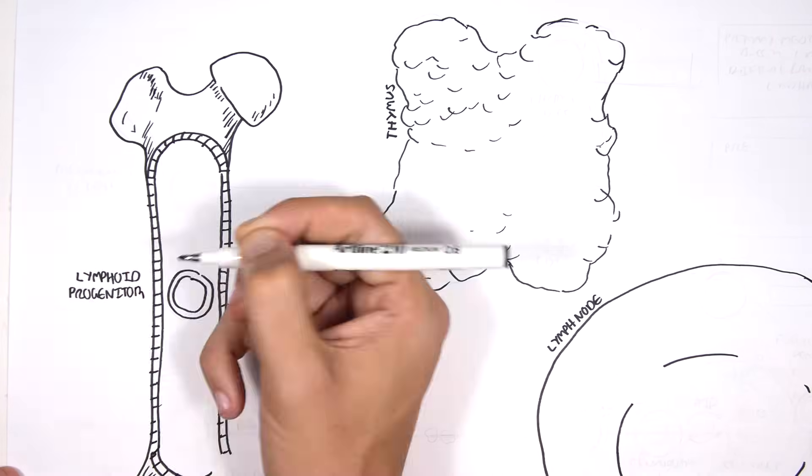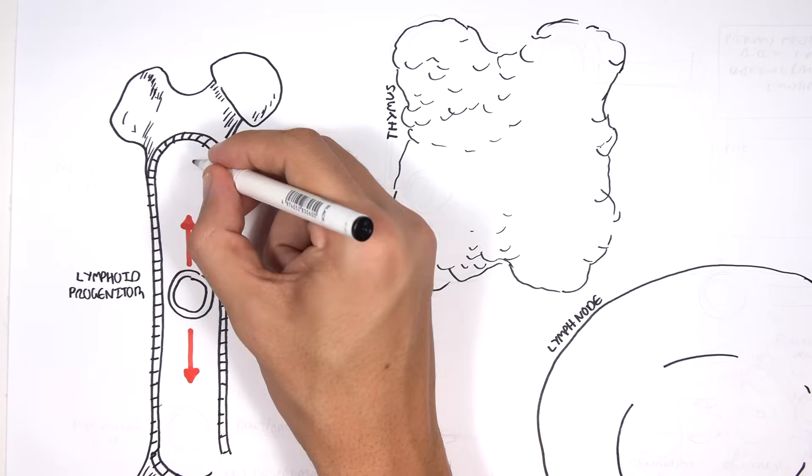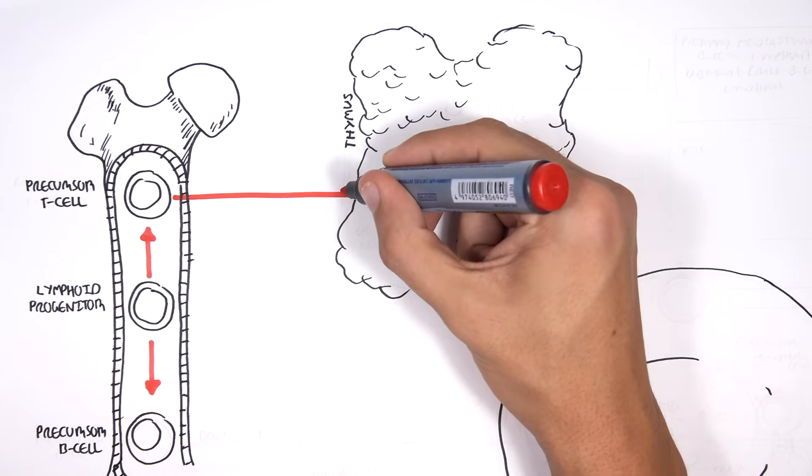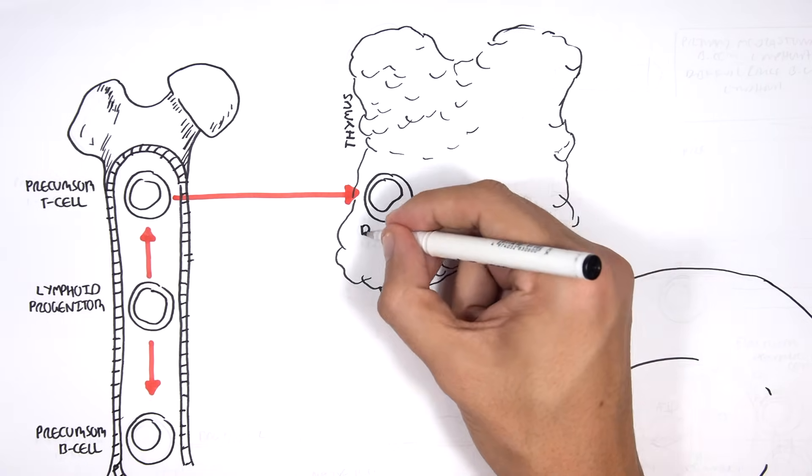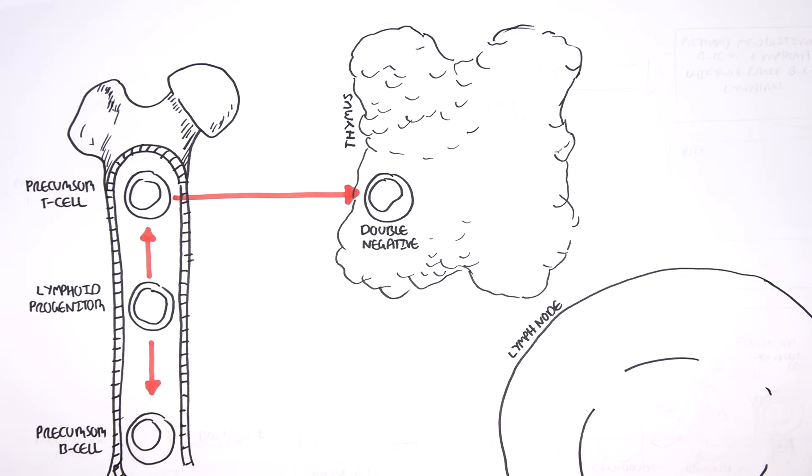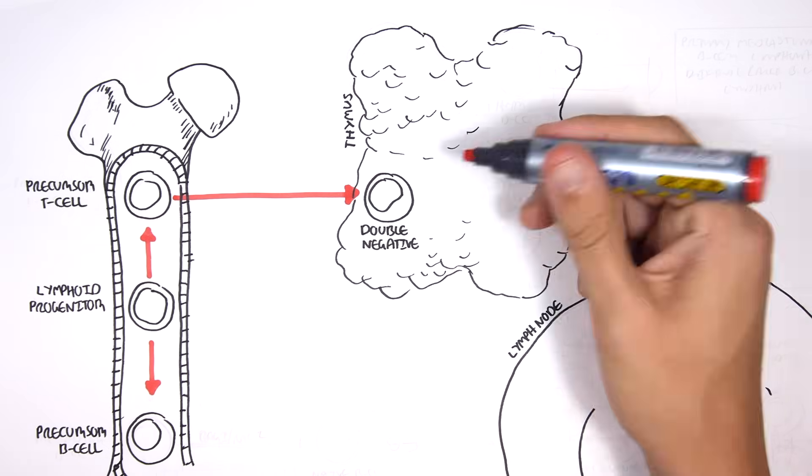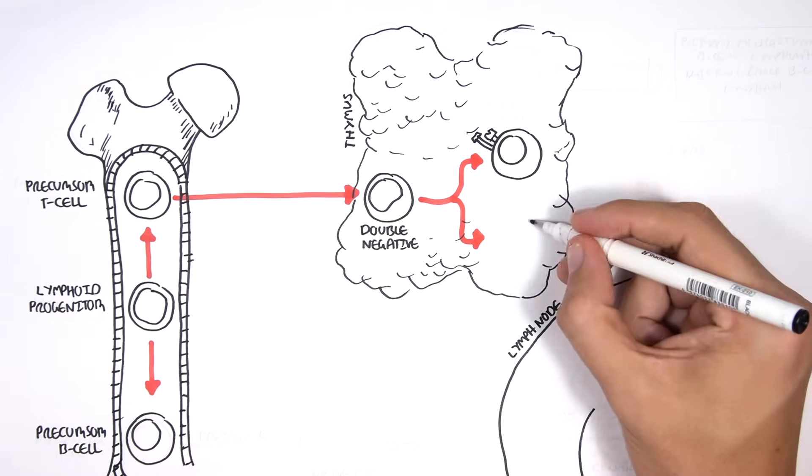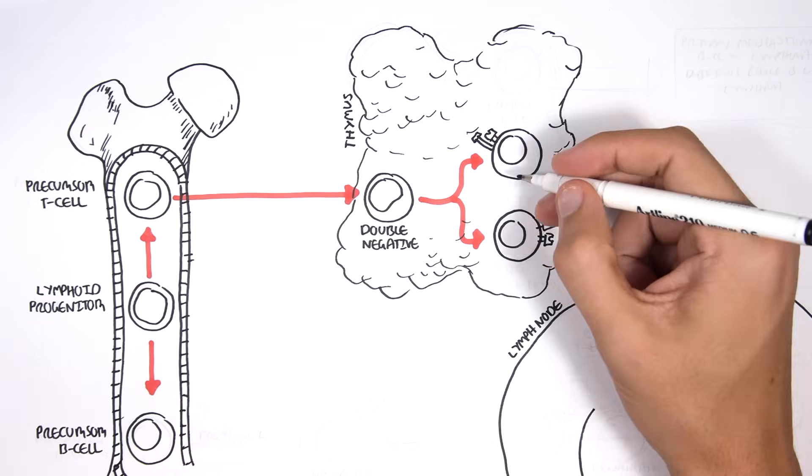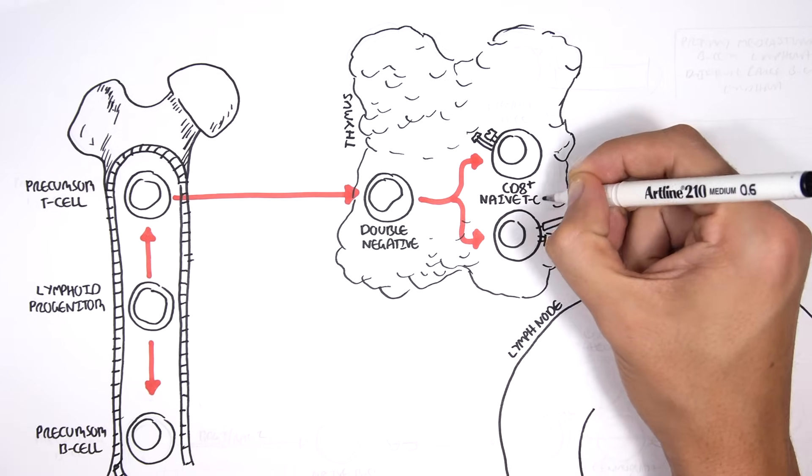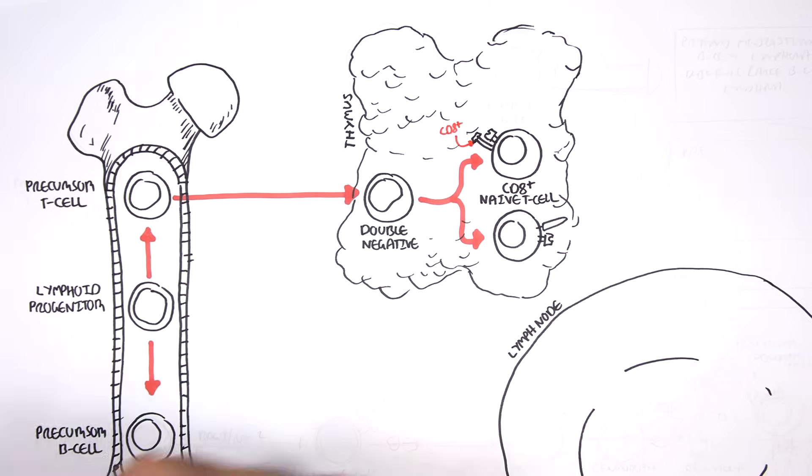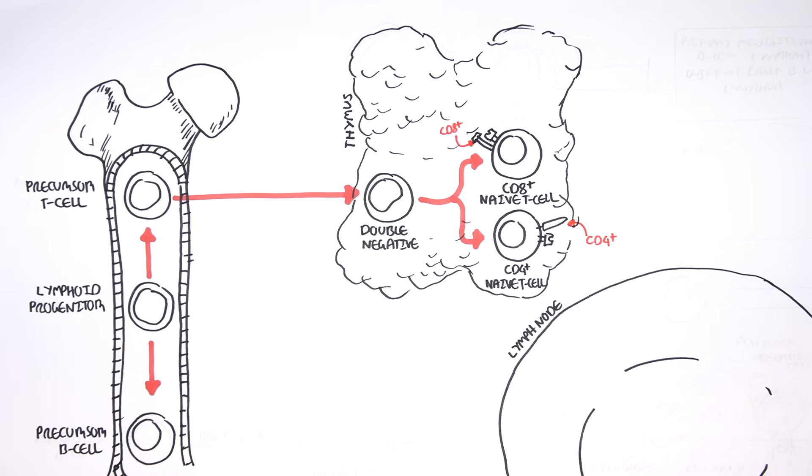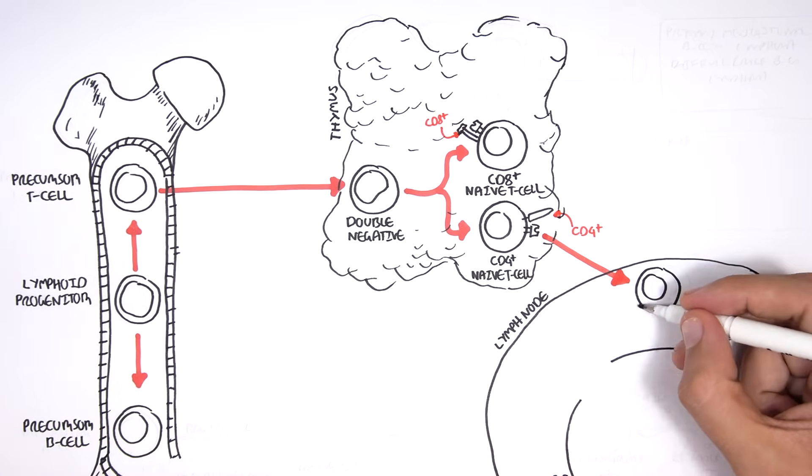In the bone marrow there are lymphoid progenitor cells which can either become a precursor T cell or precursor B cell. The precursor T cells move into the thymus where they become double negative thymocytes, negative for both CD4 and CD8 receptors. In the thymus, the double negative thymocytes develop to become either a CD8 naive T cell or a CD4 naive T cell. The naive CD4 and CD8 T cells have a T cell receptor on them and then move into the lymph node ready to become activated.